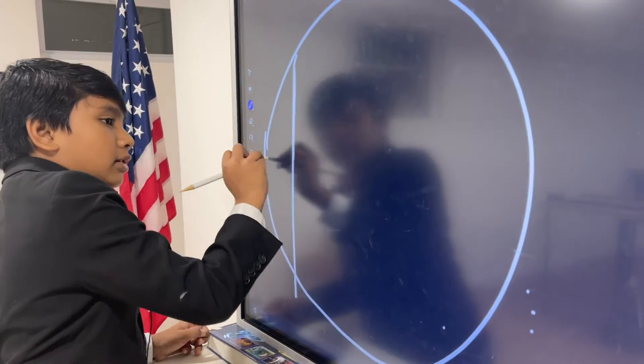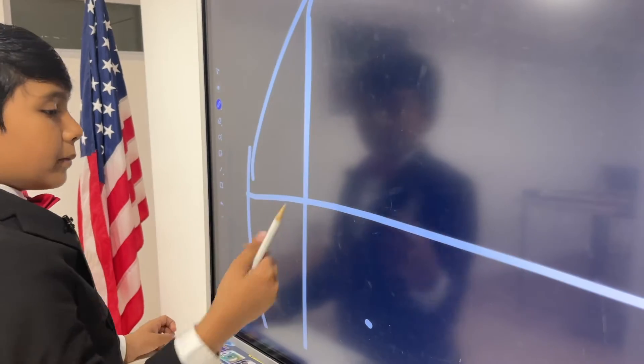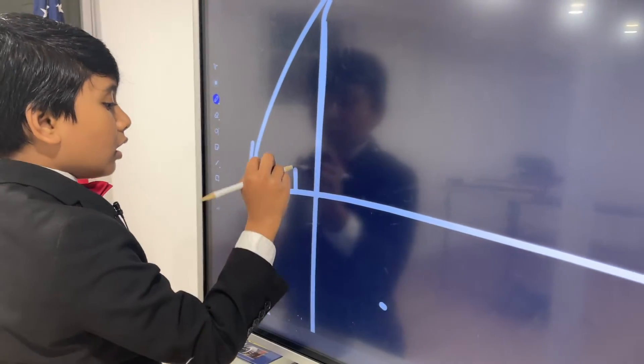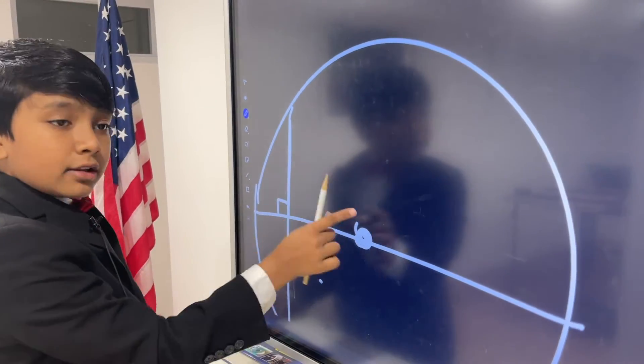if you have the perpendicular bisector of a chord, then it's always going to run through the center of the circle.